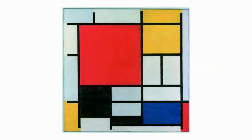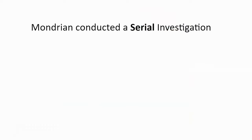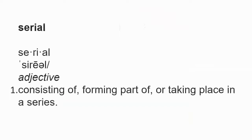But he didn't start there. Mondrian made a serial investigation. What does serial mean? It means consisting of, forming a part of, or taking place in a series. A series is a collection of things that have a start and an end. So Mondrian's serial investigation had an end, which we've already seen.